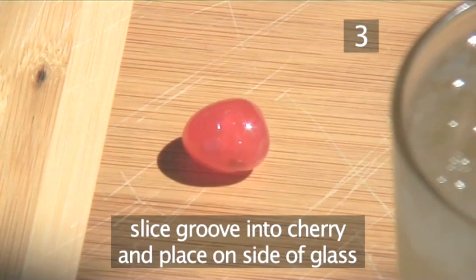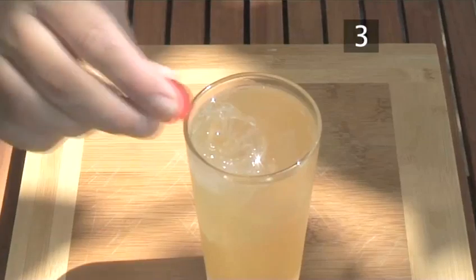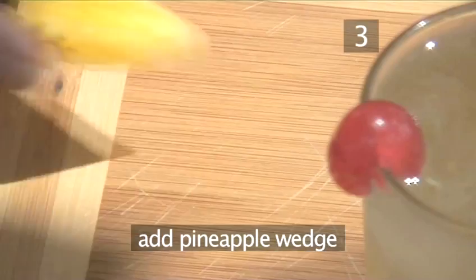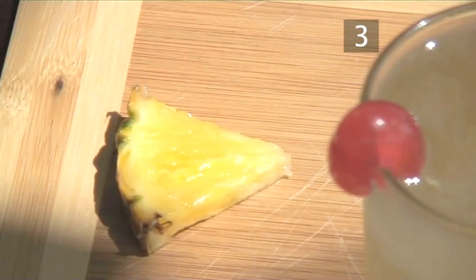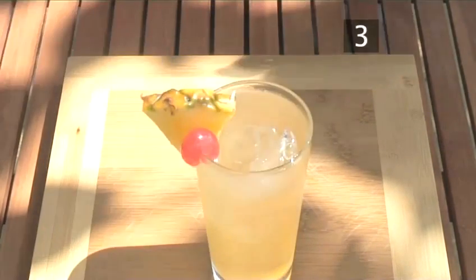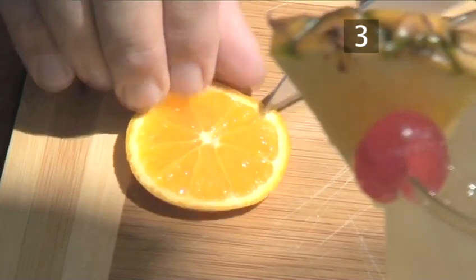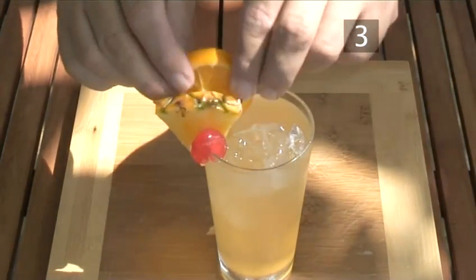Slice a groove into a cherry and place it on the side of the glass. Next, garnish with a pineapple wedge and a slice of orange. Then, serve.